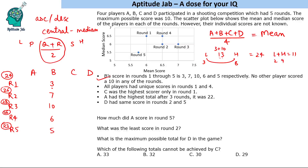With B = 3 (lowest) and the highest = 8, the other two scores must add up to 13. They cannot be 4 and 9, or 5 and 8, so the other two scores are 6 and 7. Since C was the highest scorer only in Round 1, C scores 8. A and D score 6 and 7 (to be determined later). All players have unique scores, which is satisfied.